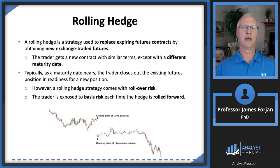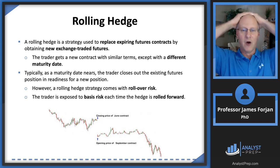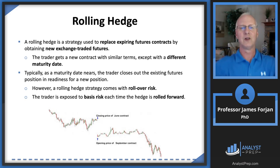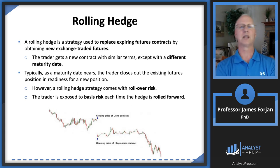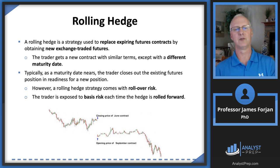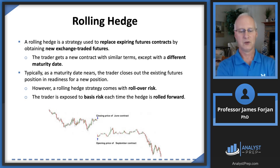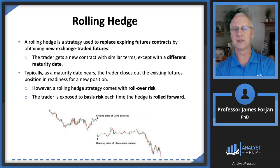After the three-month hedge period, if Rachel is still worried the NASDAQ 100 will continue to fall, she can roll her hedge — replacing expiring futures contracts with new ones at a different maturity date. She would probably replace the three-month contract with another three-month, or extend to six months if she expects prices to fall longer.